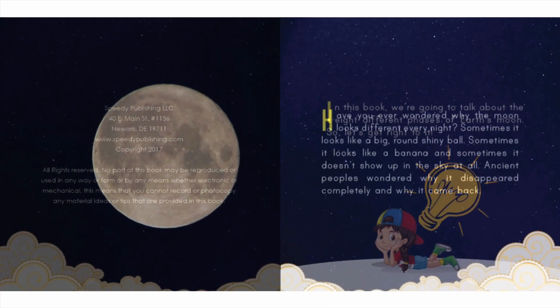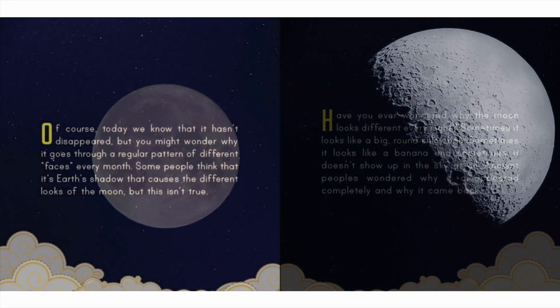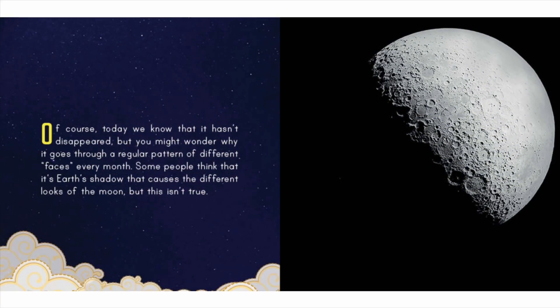Have you ever wondered why the moon looks different every night? Sometimes it looks like a big round shiny ball, sometimes it looks like a banana, and sometimes it doesn't show up in the sky at all. Ancient peoples wondered why it disappeared completely and why it came back.